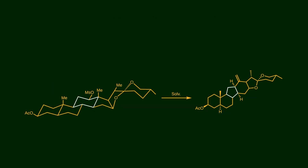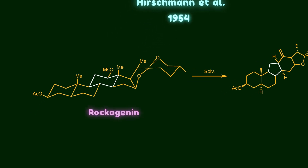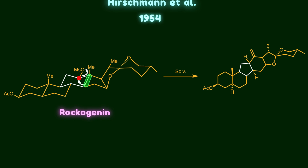The term stereoelectronic effect was first introduced in a paper by Hirschman, who described an unusual ring contraction in coccionine. During this rearrangement, the six-membered ring is contracted to a five-membered ring. Mechanistically, this carbon-carbon bond shifts to the carbon atom attached to a good leaving group. Interestingly, if the mesylate is positioned in the axial position, this rearrangement does not happen.